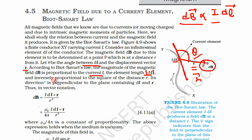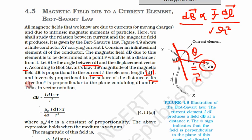dB is also inversely proportional to the square of distance R. So summarizing the three things: dB is proportional to I, proportional to DL, and inversely proportional to R square. Its direction is perpendicular to the plane containing DL and R.